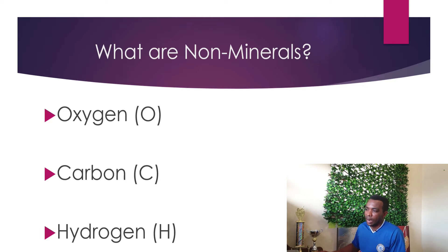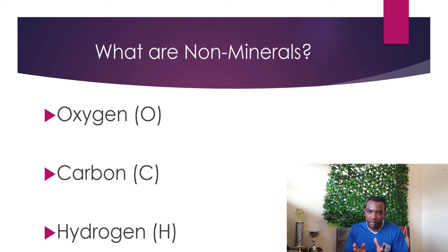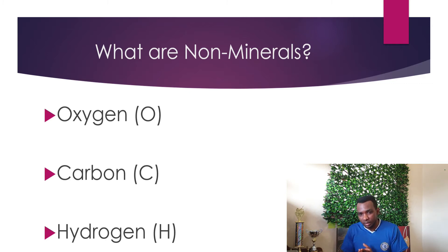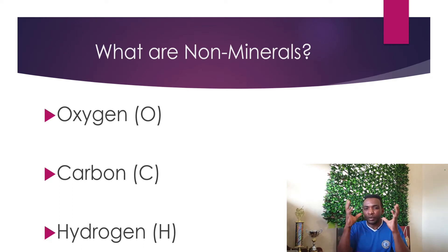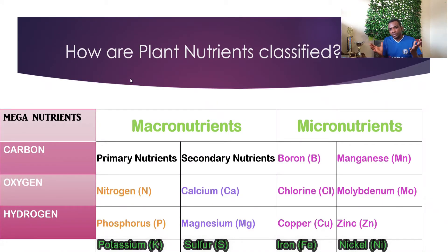As it relates to non-minerals, these would be oxygen, carbon, and hydrogen. So put all of these minerals and non-minerals together — these are what supply the plant with the nutrients it needs for growth and development. Whether it's a vegetable plant, a fruit tree, or an ornamental plant for landscaping, these are the nutrients — both minerals and non-minerals — that give you that beautiful landscape, pretty flowers, and large beautiful fruit.